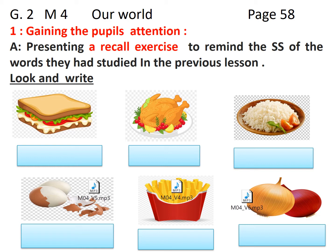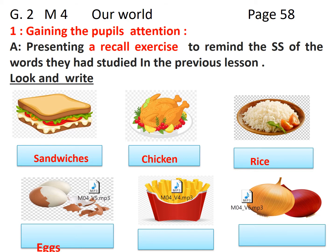Before tackling the new material, let me remind you of the words you had studied before. Look at the pictures and try to identify them. Picture number one: sandwiches. Picture number two: chicken. Picture number three: rice. Picture number four: eggs. Picture number five: chips. The last picture: onions. Very good — in this way we remember well some of the words we had learned before.